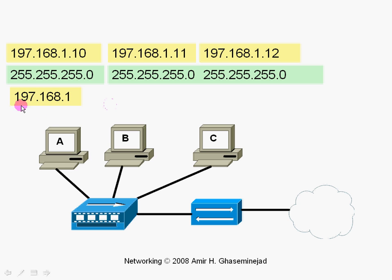And computer A, in this case, will know that this is a local communication. It will compose an IP packet, put it in a frame, and send it to the local network, and the destination computer will get it.